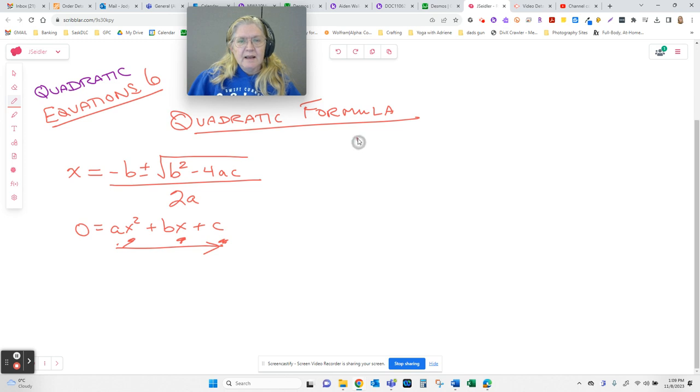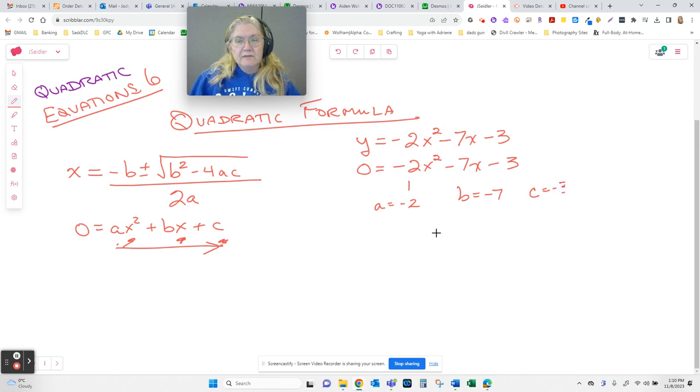So let's say I give you the function. And let's stick with one that I, yeah, we'll do this one first. It's not going to be pretty, but that's okay. That's why we use the quadratic formula. There's the function. In order to find the X intercepts, we need to solve the equation. So A is negative 2, B is negative 7, C is negative 3. And those negatives are important.